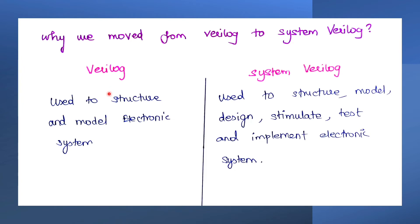The next question is: why have we moved from Verilog to SystemVerilog? In Verilog, it is used to structure and model electronic systems — structuring meaning representing the circuit diagram, and modeling meaning coding that particular circuit. But in SystemVerilog, we can structure, model, design, simulate, test, and implement electronic systems. That is why we moved from Verilog to SystemVerilog.